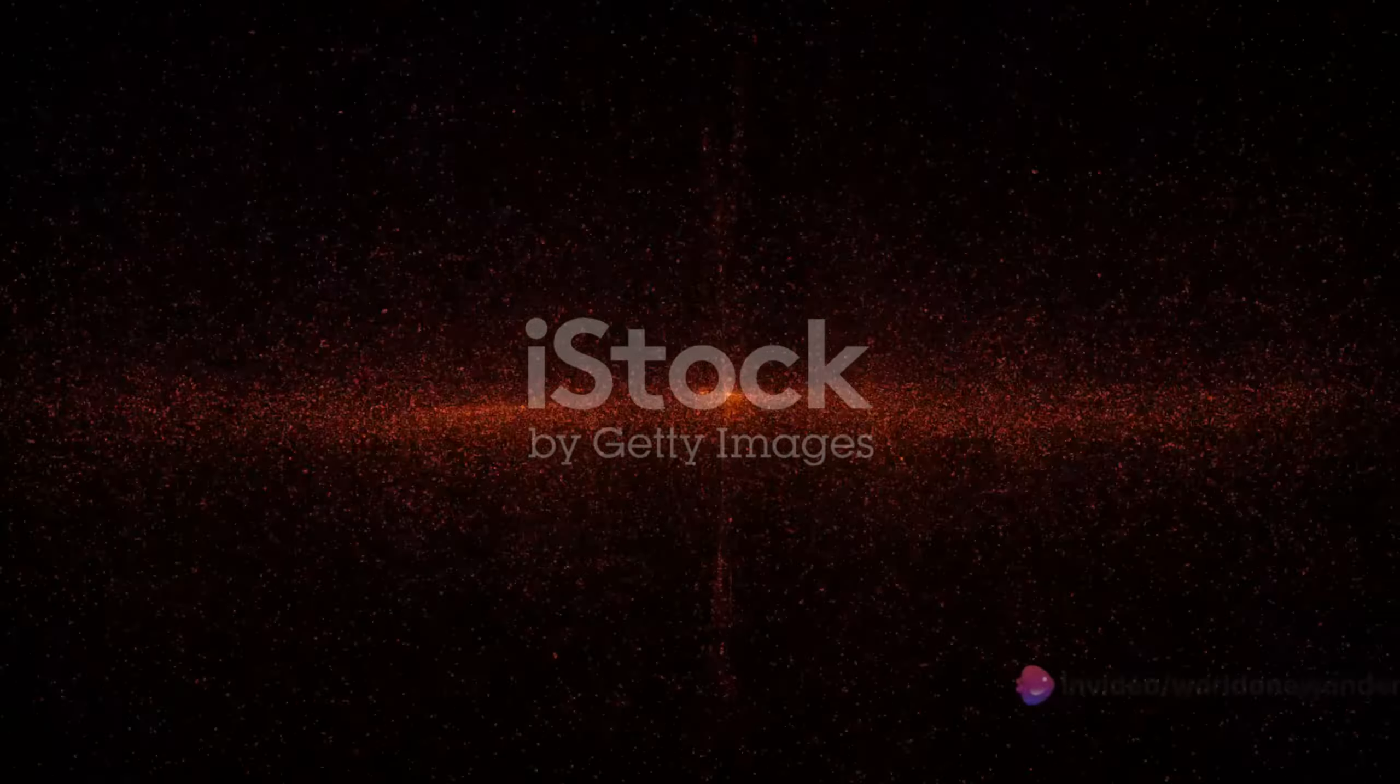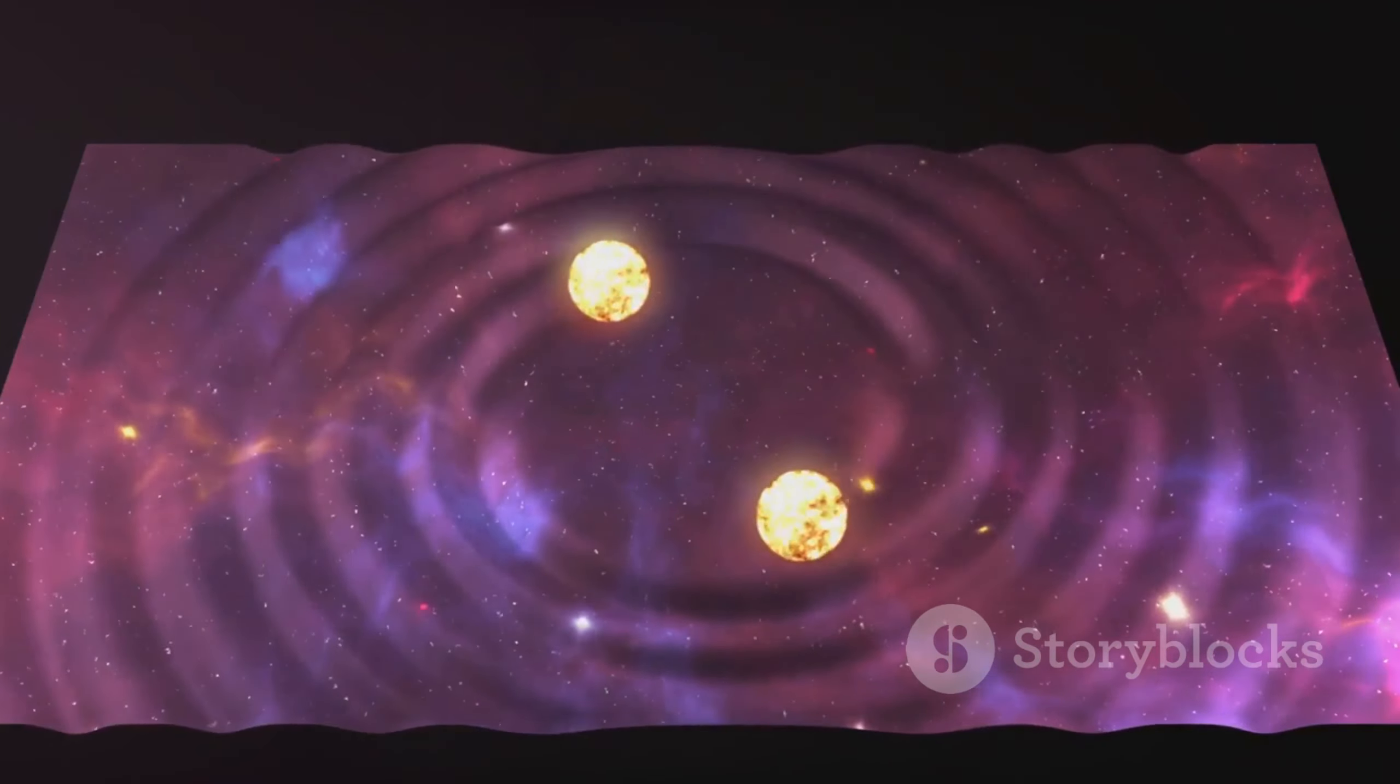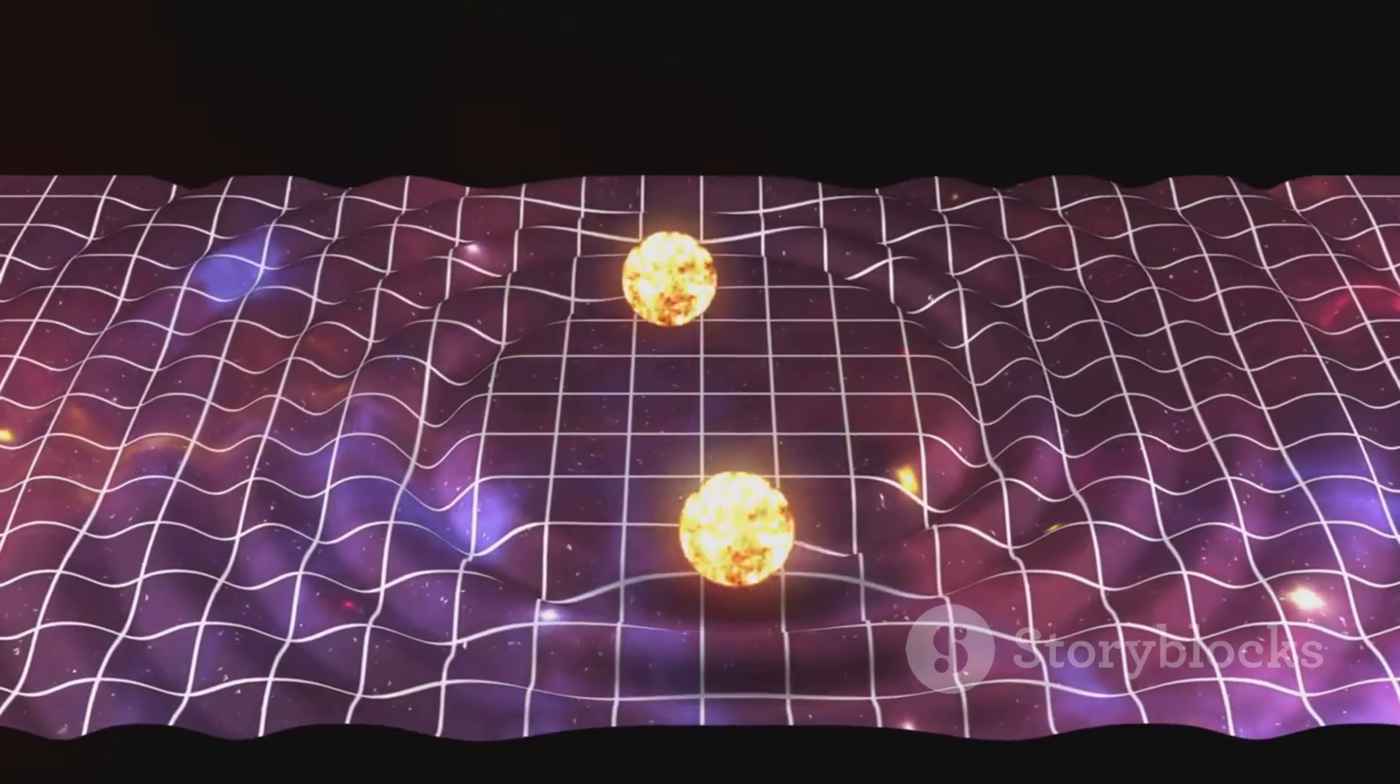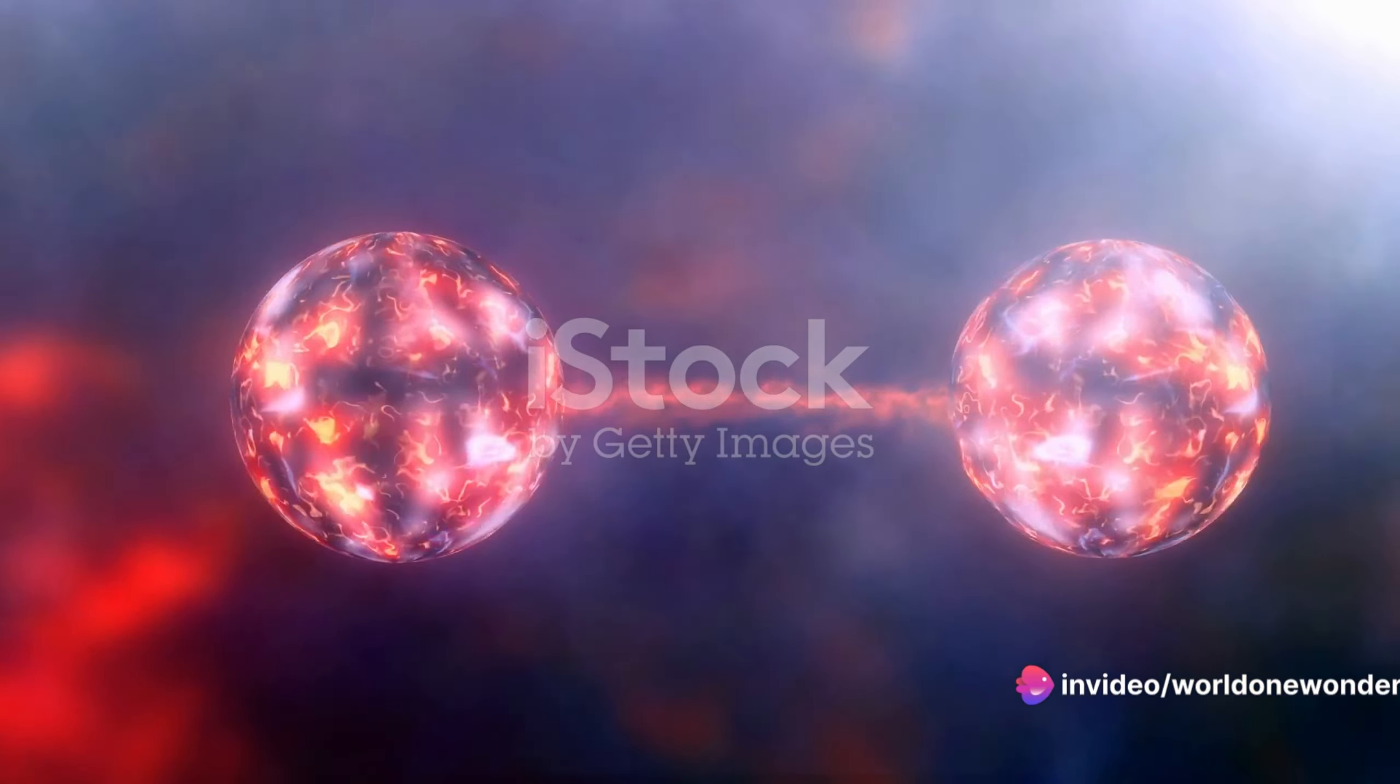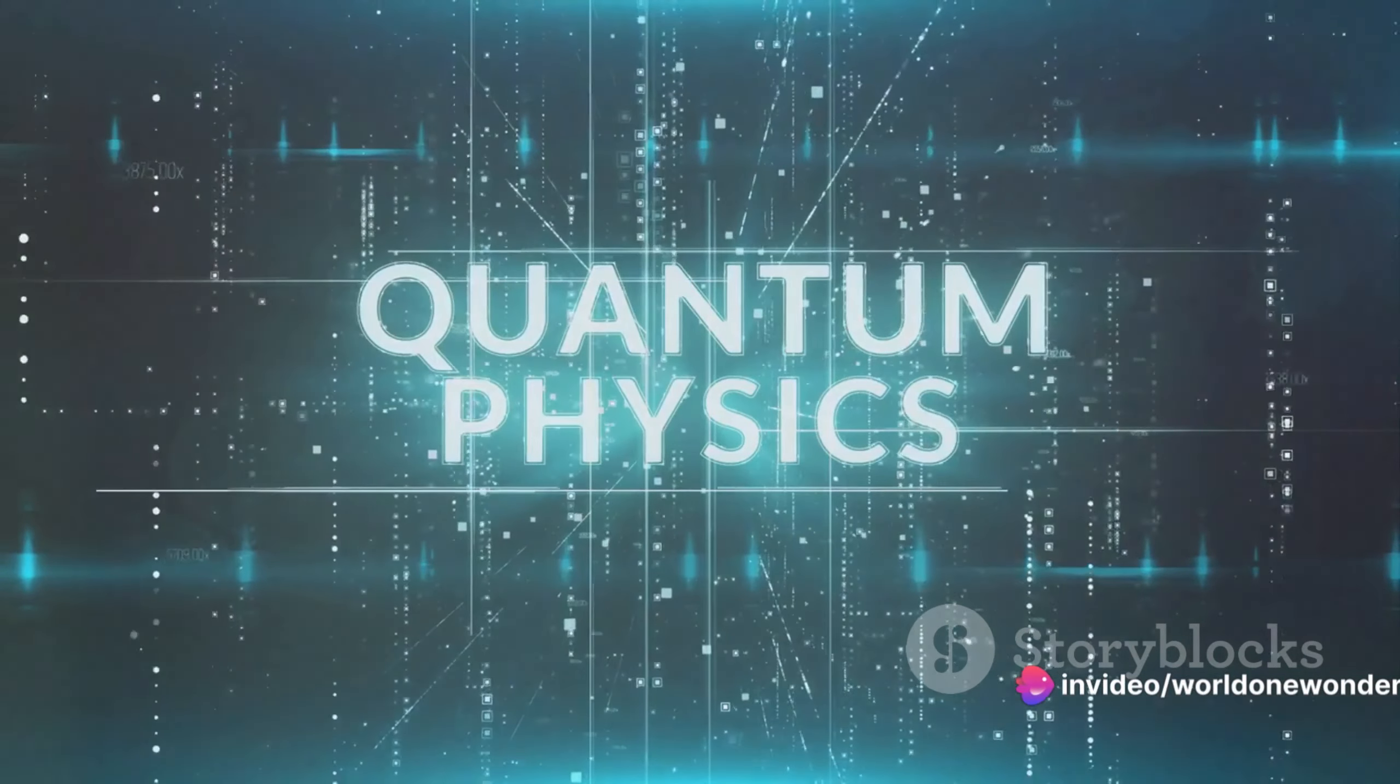But what's truly fascinating is that these flavors aren't set in stone. This brings us to a thrilling concept in the world of neutrinos, the neutrino oscillation. Now, let's not get intimidated by the term, it's quite straightforward, really. Neutrino oscillation refers to the phenomenon where neutrinos change their flavor as they travel. Yes, they morph from one type into another in mid-flight. Imagine boarding a flight as an electron neutrino, and disembarking as a muon neutrino. Quite a trip, isn't it? So how does this happen? It all comes down to quantum mechanics. Without diving too deep into the complexities, let's just say that neutrinos aren't strictly one flavor or the other, but rather a mixture. They exist in a state of superposition, meaning they can be in multiple states at once. As they travel, they oscillate between these states, effectively changing their flavor.